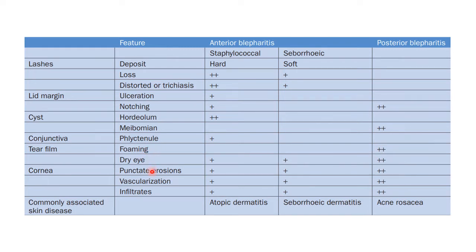Dry eye, corneal punctate erosions, vascularization and infiltrates can all be seen in all types of blepharitis; however, they are more prominent in posterior blepharitis. Remember: staphylococcal anterior blepharitis is associated with atopic dermatitis; seborrheic anterior blepharitis is associated with seborrheic dermatitis; and posterior blepharitis is associated with acne rosacea.